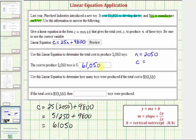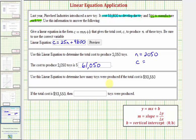Now for our last question, we're asked to determine how many toys were produced if the total cost was $93,550. So now on this question, they're telling us the total cost equals $93,550. They want us to determine the number of toys that were produced. So now we'll substitute 93,550 for C and solve for N.